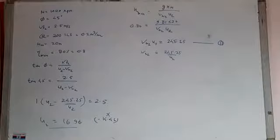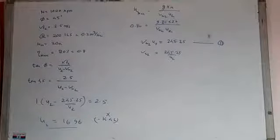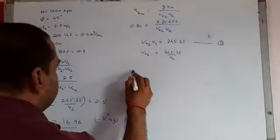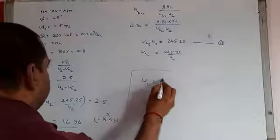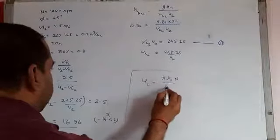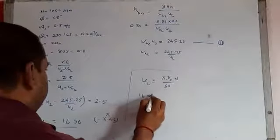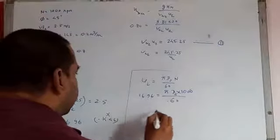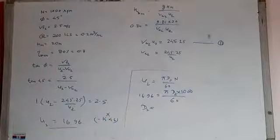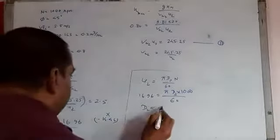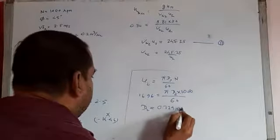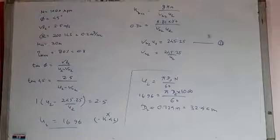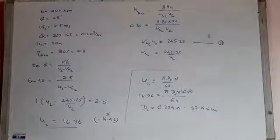And now finding out the value of D2. For finding the value of D2, U2 equal to pi D2 N by 60, so this is 16.96 equal to pi D2 into 1000 by 60. So the value of D2 comes here 0.324 meter, that is 32.4 centimeter.